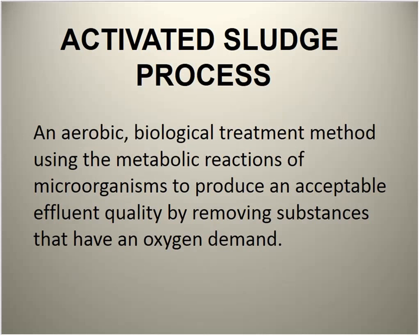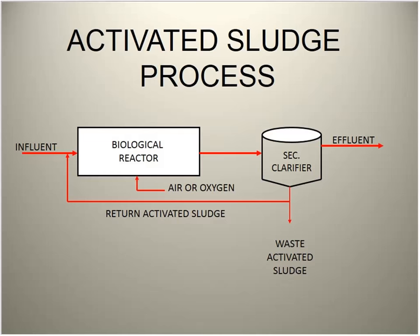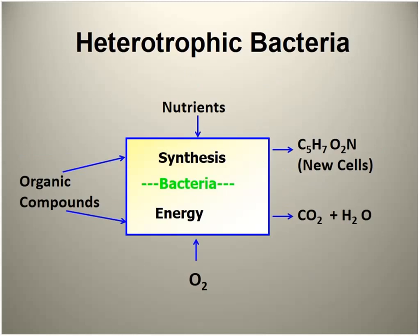When a plant has to upgrade for phosphorus removal, if it's a fixed film process they will add an activated sludge system because that's where we have ultimate control. We still have our biological reactor, we still have to provide air to these organisms, and we're going to have to provide more air. We're largely talking about two different types of bacteria: heterotrophic bacteria that go after carbonaceous BOD, and we need a certain amount of nutrient to keep the organisms in good shape.